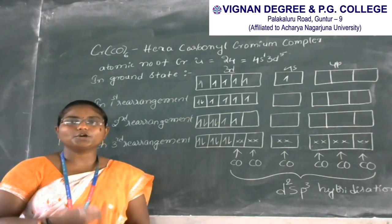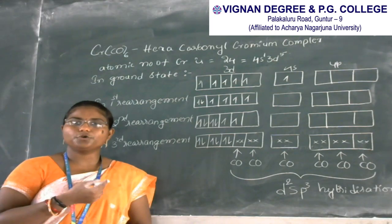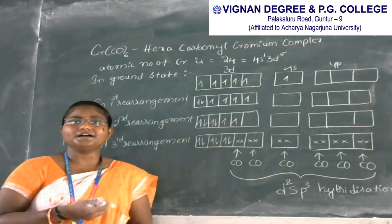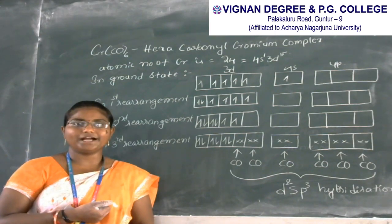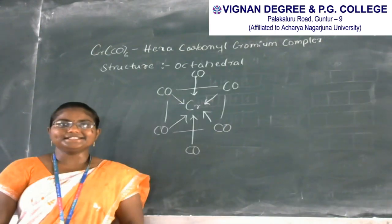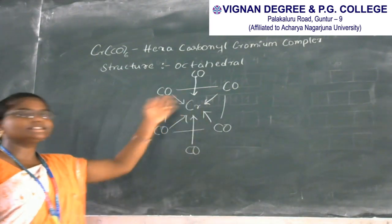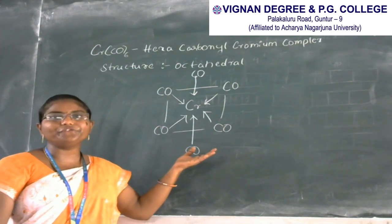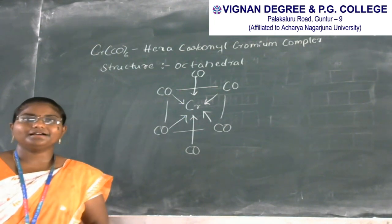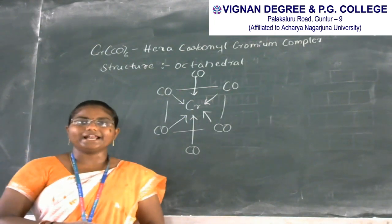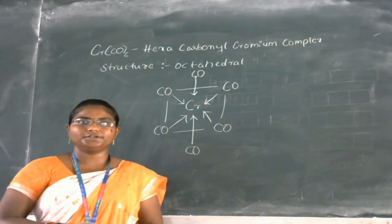Like the vanadium hexacarbonyl complex, the structure of hexacarbonyl chromium complex is also octahedral. The 6 carbonyls occupy the 6 corners of the regular octahedron. In this complex, chromium acts as an electron pair acceptor and CO ligands act as electron pair donors.